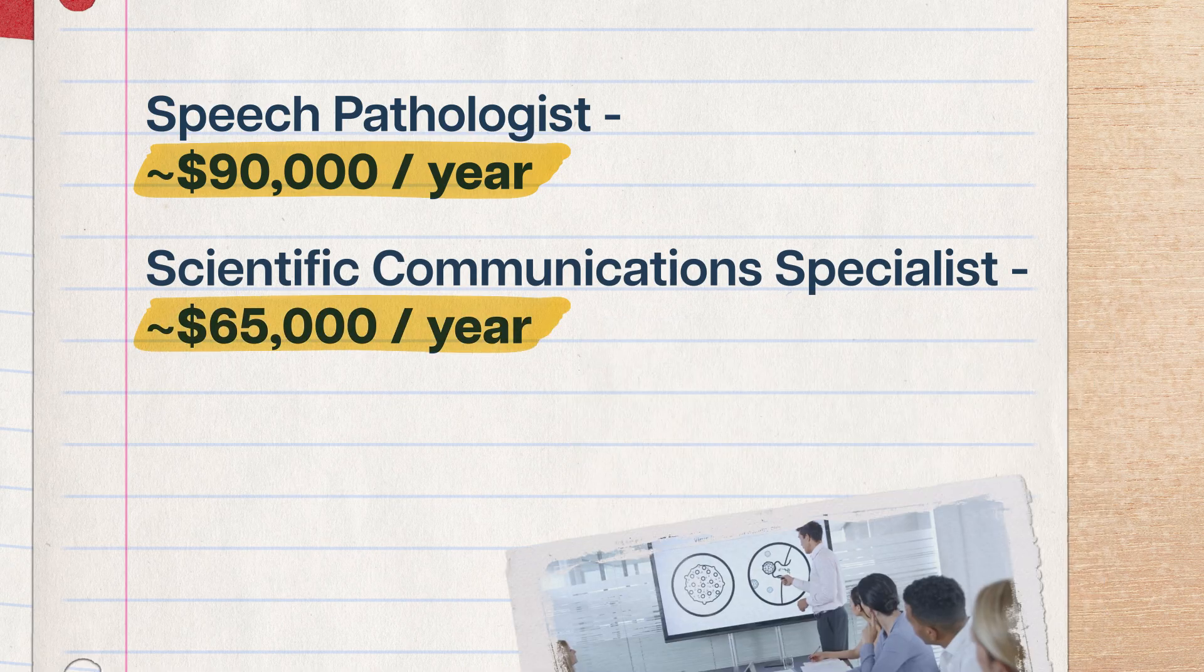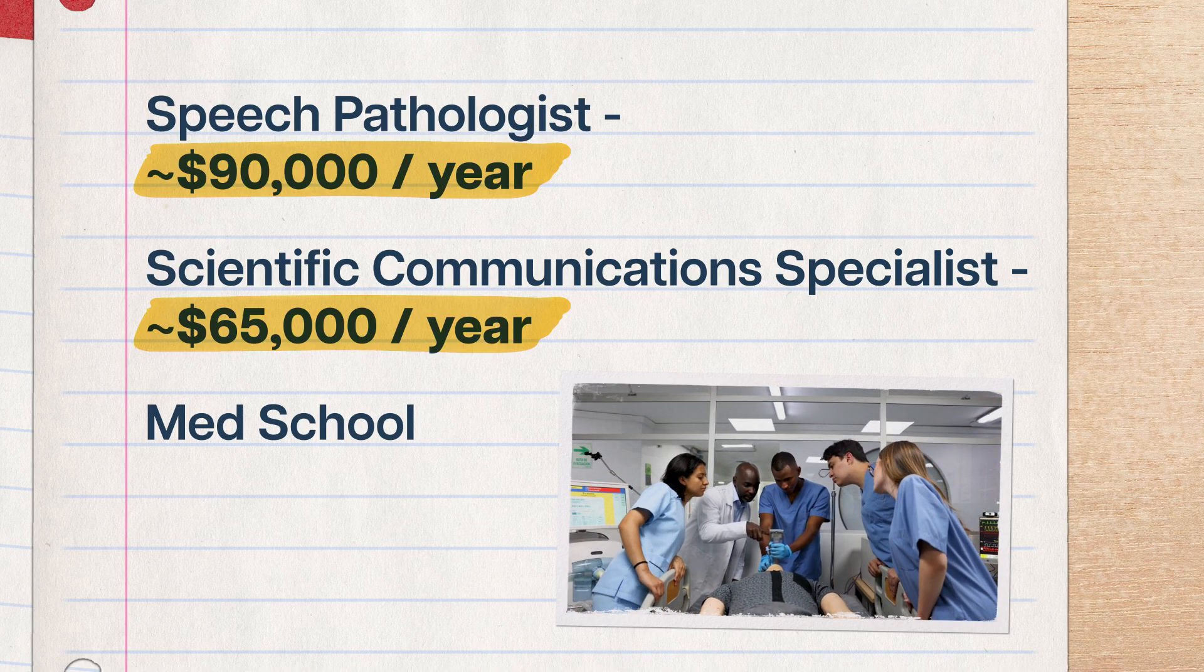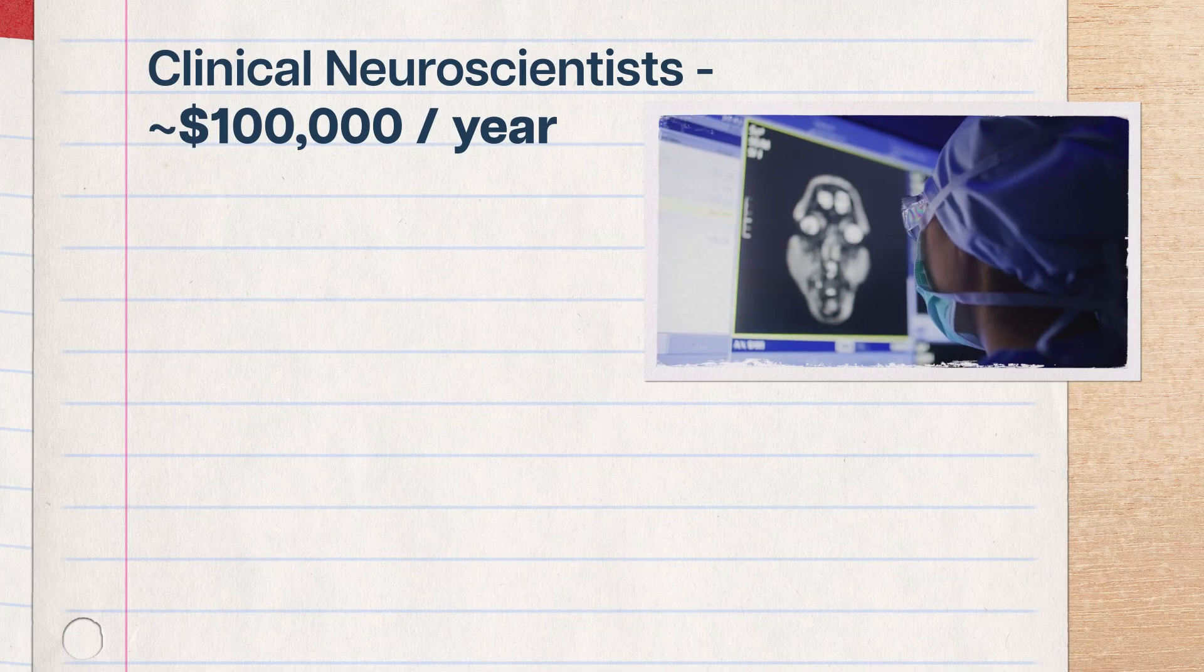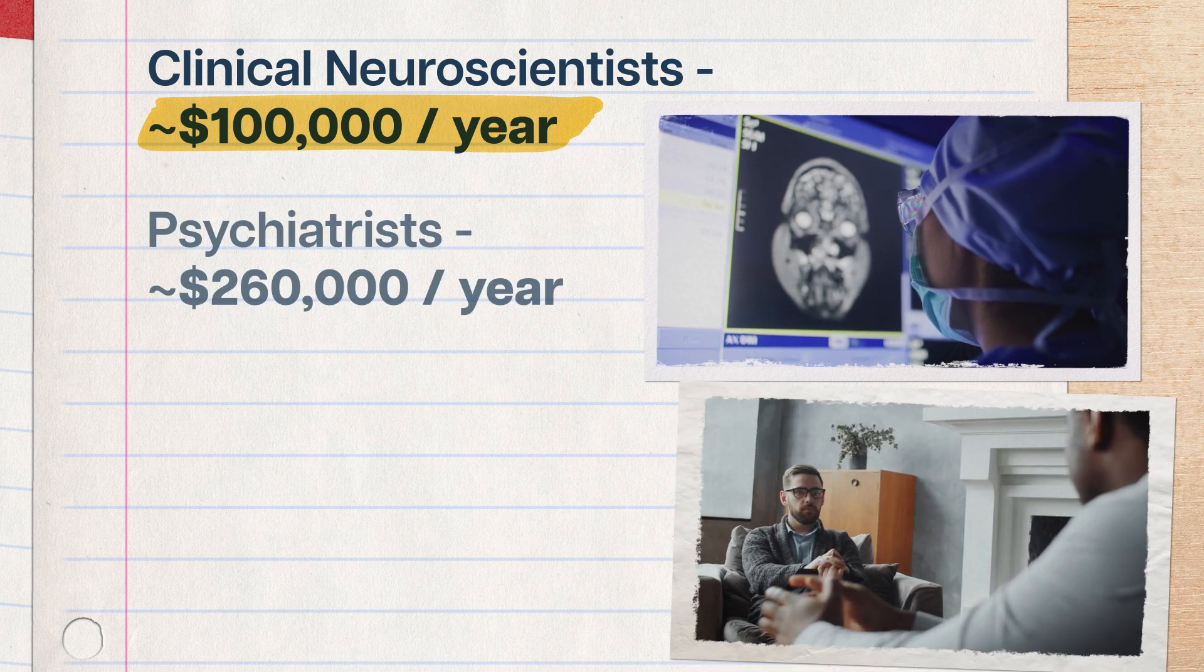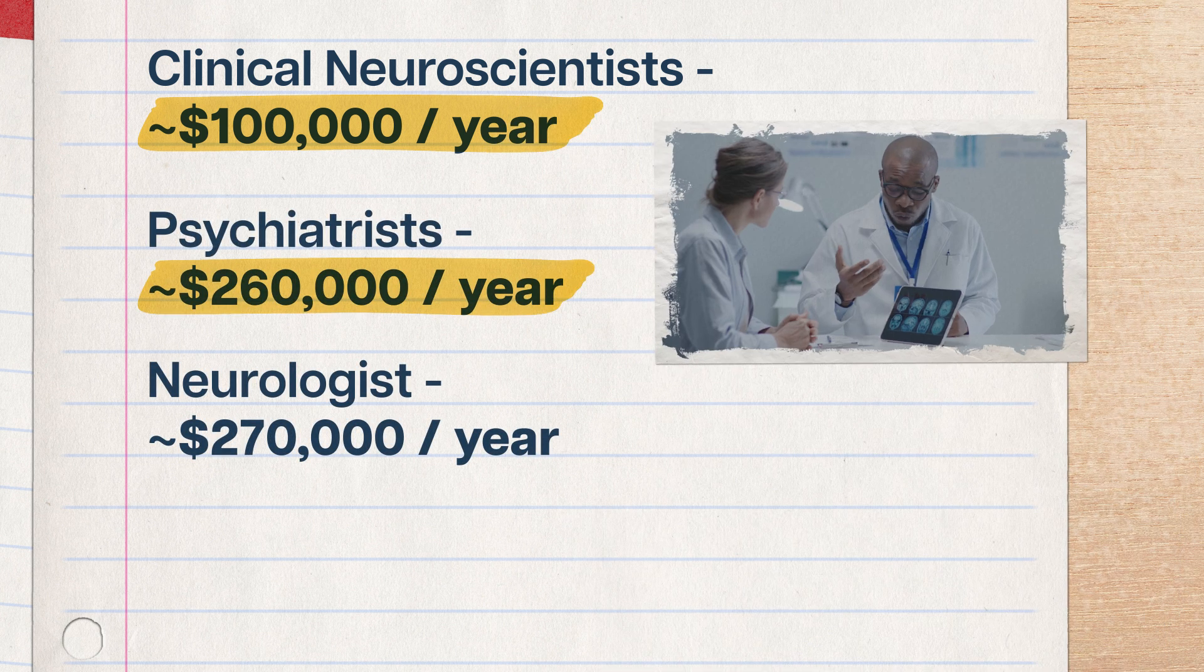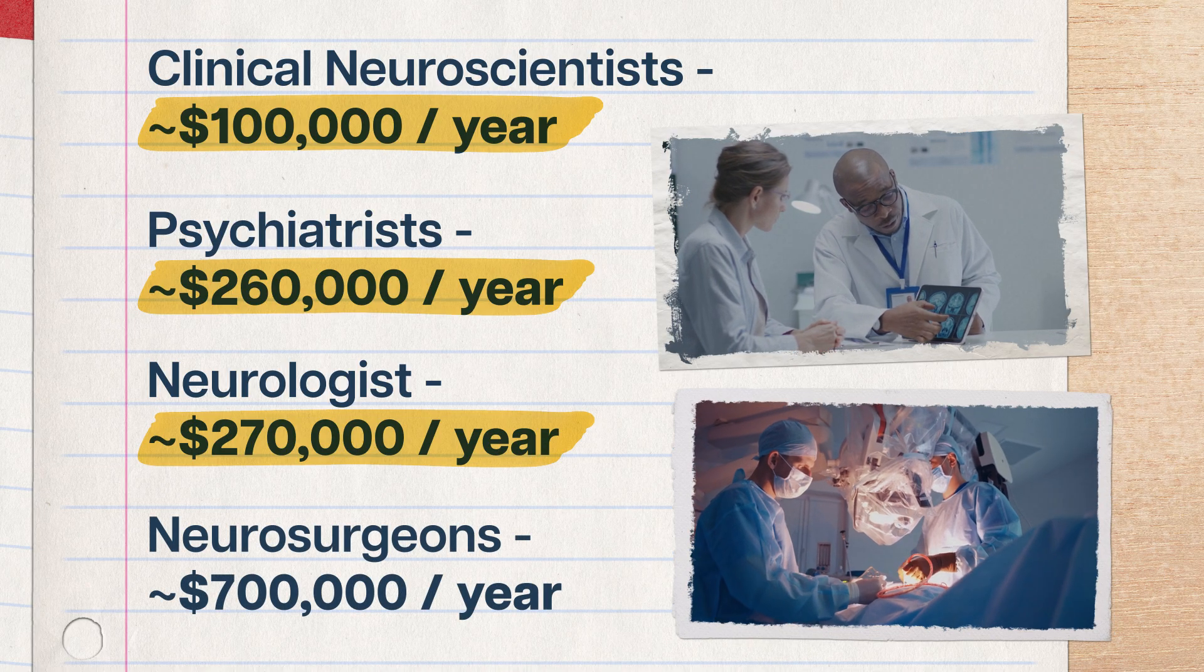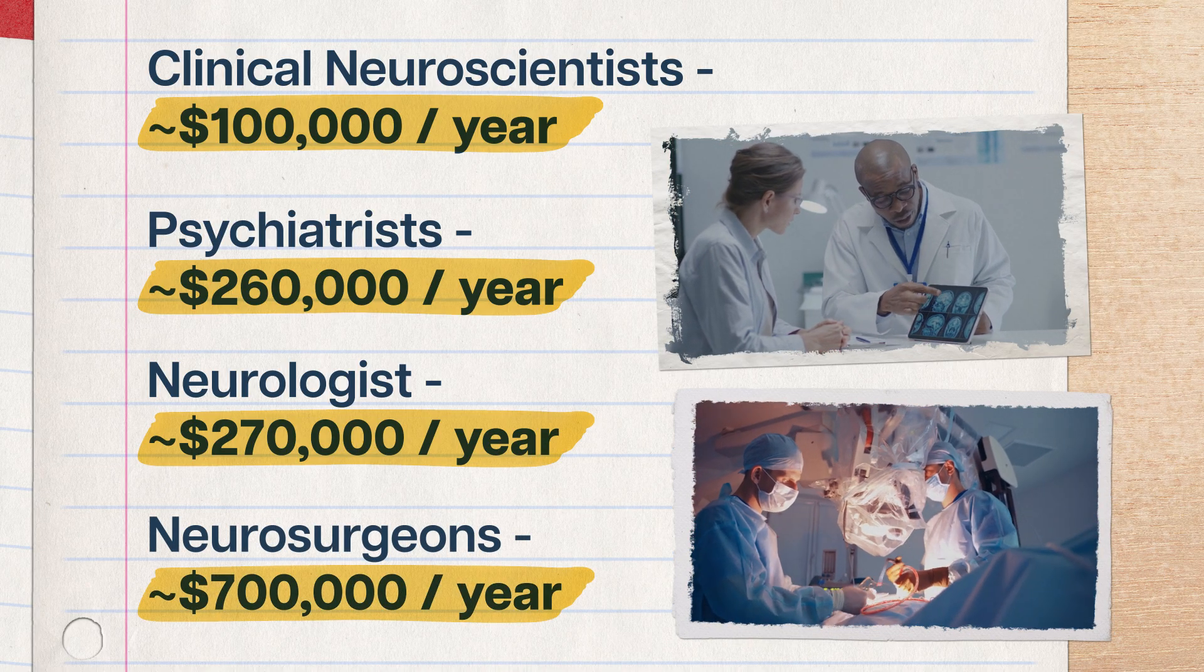A lot of neuroscience majors also go to med school, which opens the doors to way higher-paying careers. Clinical neuroscientists can make around $100,000 a year, and psychiatrists can make around $260,000. Neurologists can make $270,000, and neurosurgeons can make something like $700,000 a year. The point is, there's no shortage of jobs in neuroscience, especially if you're willing to take on some more school.